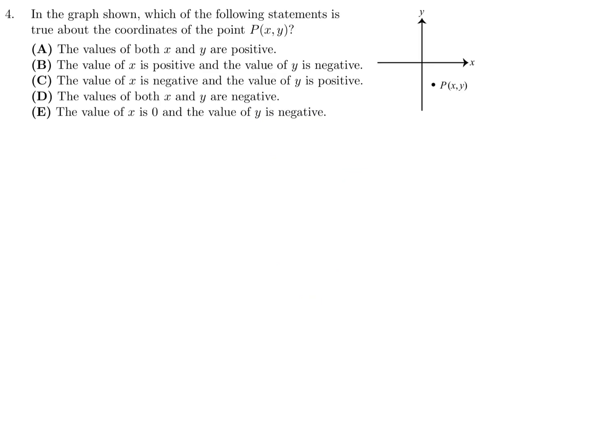In the graph shown, which of the following statements is true about the coordinates of point P (X, Y)? X is over here, that's positive, because everything on this side is positive. Everything on that side is negative. So X is positive. Y appears here, somewhere there. Anything below the X-axis is negative, so Y is negative. The one that matches that is B for number 4.